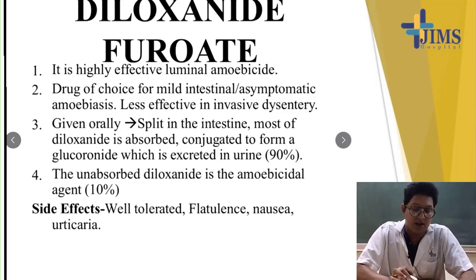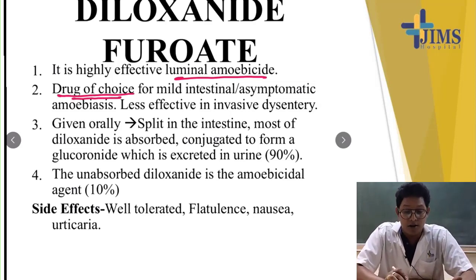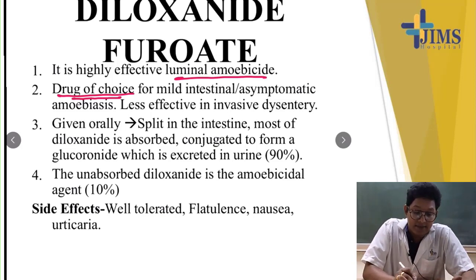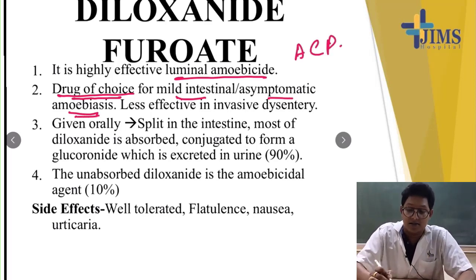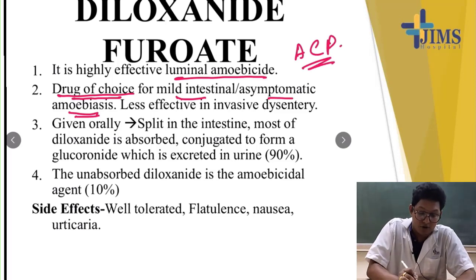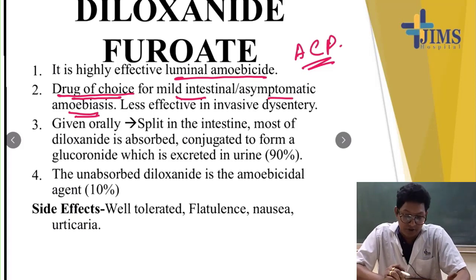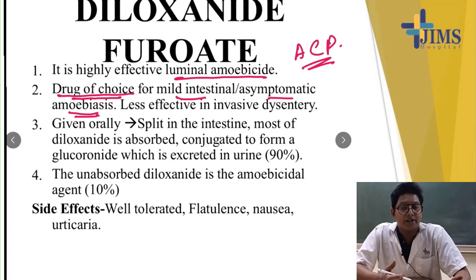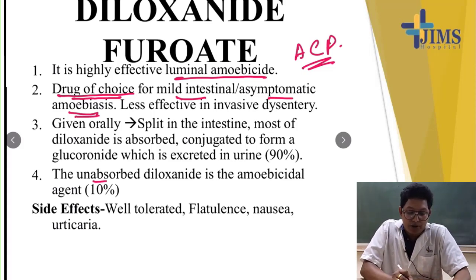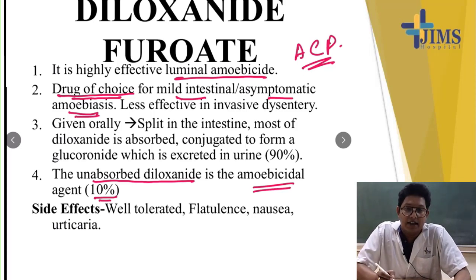The last drug is diloxanide furoate — a highly effective luminal amoebicide and the drug of choice for mild intestinal or asymptomatic amoebiasis, though it is less effective in invasive dysentery. When given orally, it splits in the intestine; most of the diloxanide is absorbed and conjugated to form a glucuronide excreted in the urine. The unabsorbed diloxanide, constituting only 10% of the administered dose, is the main amoebicidal agent. Side effects are minimal — flatulence, nausea, urticaria — and therefore it is well tolerated.